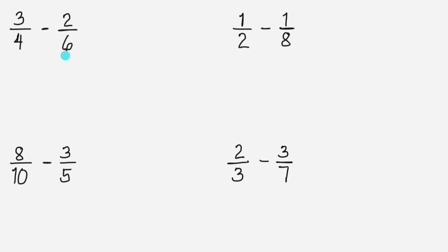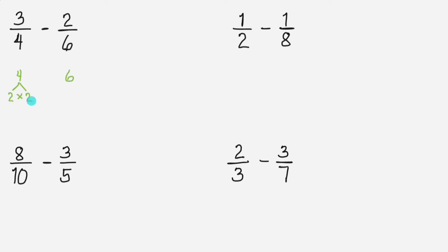For the first example, let's find the LCD using prime factorization. Let's write the denominators here: 4 and 6. Now, let's think of numbers that if we multiply, the product is 4. We can multiply 2 times 2. 2 times 2 equals 4. 2 is a prime number, so these are the prime factors of 4.